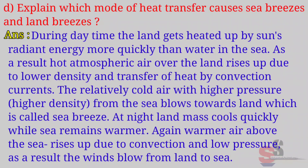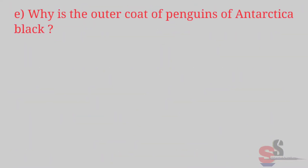(d) Explain which mode of heat transfer causes sea breeze and land breeze. Answer: During daytime, the land gets heated up by the sun's radiant energy more quickly than water in the sea. Hot atmospheric air over the land rises up due to lower density, transferring heat by convection currents. The relatively cold air with higher density from the sea blows towards the land — this is called sea breeze.